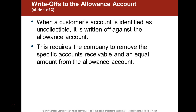When an account is written off, we charge it to the allowance account. For example, if we have $100,000 in receivables, we can categorize them: $90,000 in the 30 to 60 day bucket, $5,000 in the 60 to 90 day bucket, and $5,000 in the over 120 day bucket. The longer a receivable is not paid, the more likely it will be uncollectible. You can use that aging as a method for determining collectibility.